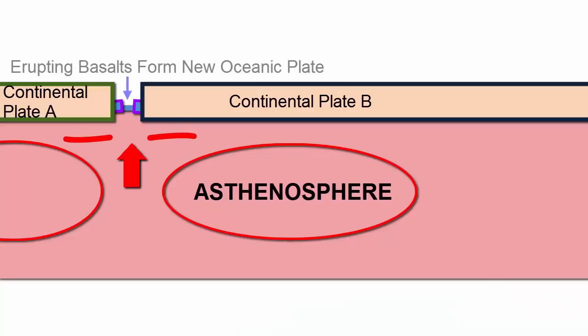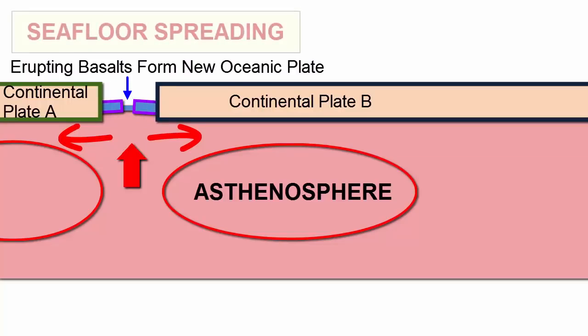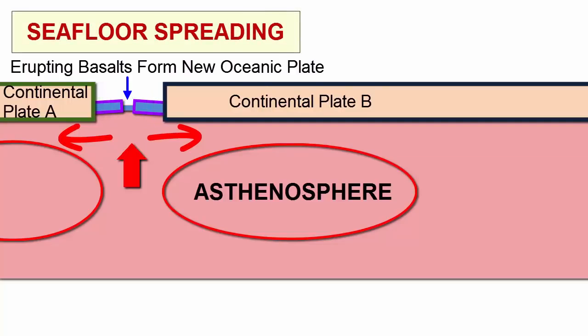dense basaltic magmas erupted, and the new plate that formed was oceanic, producing oceanic plate fused to broken halves of continental plate, now moving away from each other. Through this process, new oceans form and spread. We call this seafloor spreading.